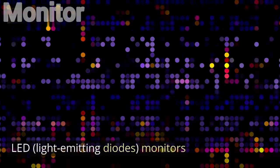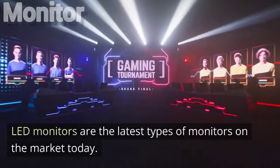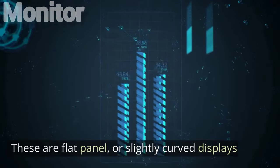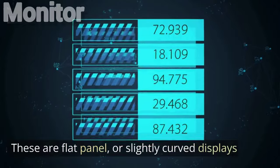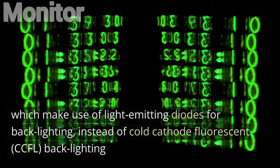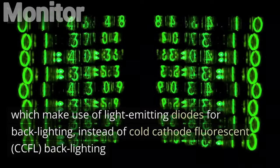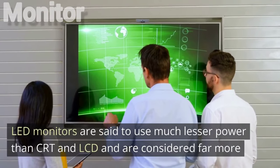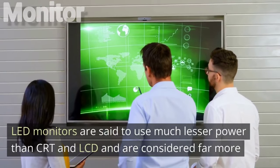LED (Light Emitting Diode) monitors are the latest types of monitors on the market today. These are flat panel or slightly curved displays which make use of light-emitting diodes for backlighting instead of cold cathode fluorescent (CCFL) backlighting used in LCDs. LED monitors are said to use much less power than CRT and LCD and are considered far more environmentally friendly.